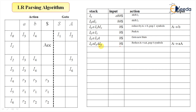Now i6 on input 'b' is reduced by the second production: A derives small a capital A. We need to pop four symbols — one, two, three, four. After popping, push the left-hand side A. Then go to the new state: i0 on input capital A goes to i2, so i2 is the new state.